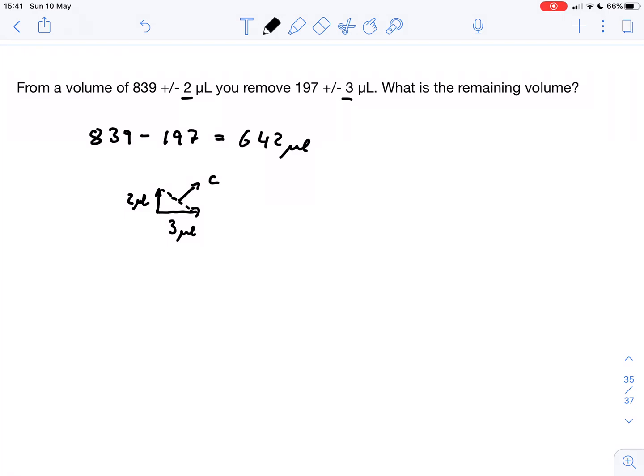We call this C, this one is A, this one is B. We know that A squared plus B squared equals C squared. So with that we can calculate the uncertainty. We can calculate C.